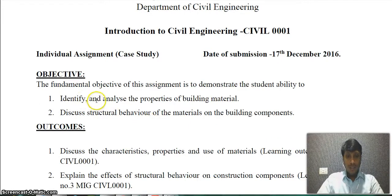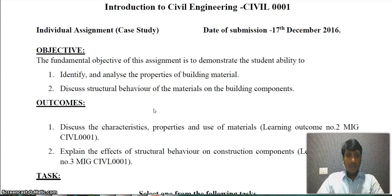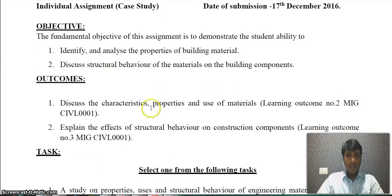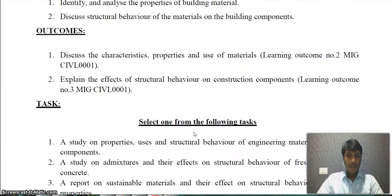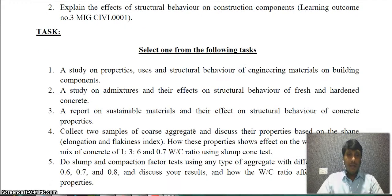The objective is to identify and analyze the properties of building materials and to discuss the structural behavior of the materials on building components. This case study meets Learning Outcomes 2 and 3 as per your module information guide. Learning Outcome 2 defines that students should be able to discuss the characteristics, properties, and use of materials.